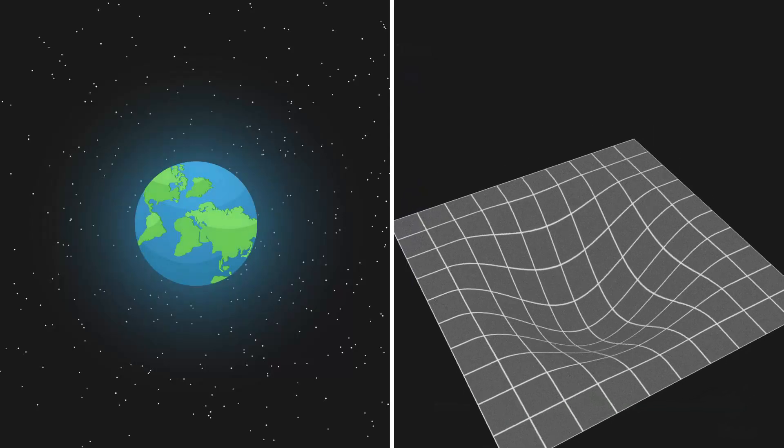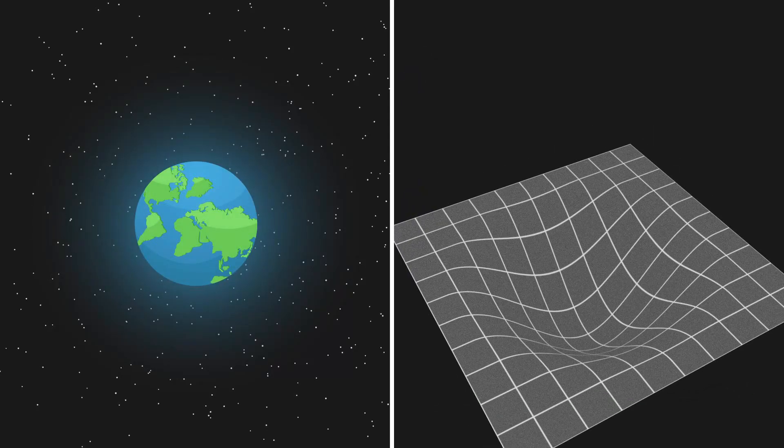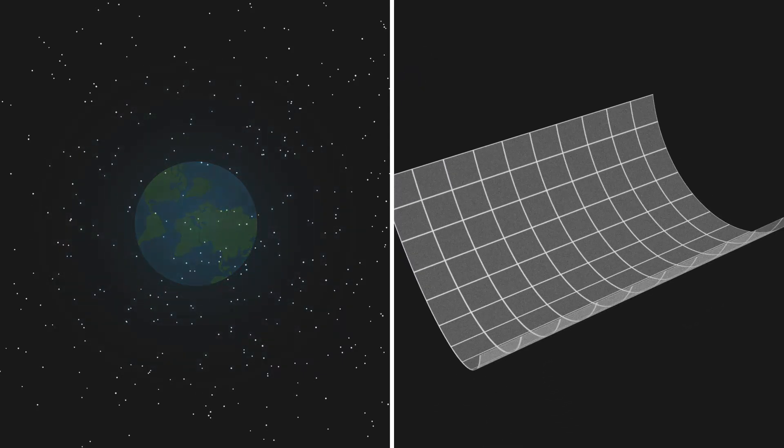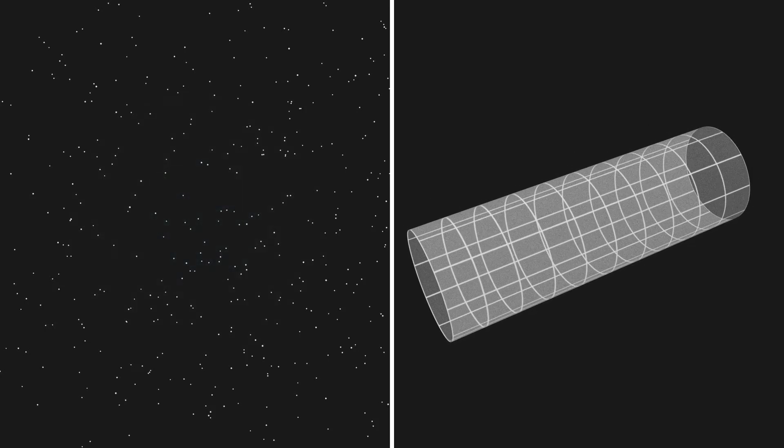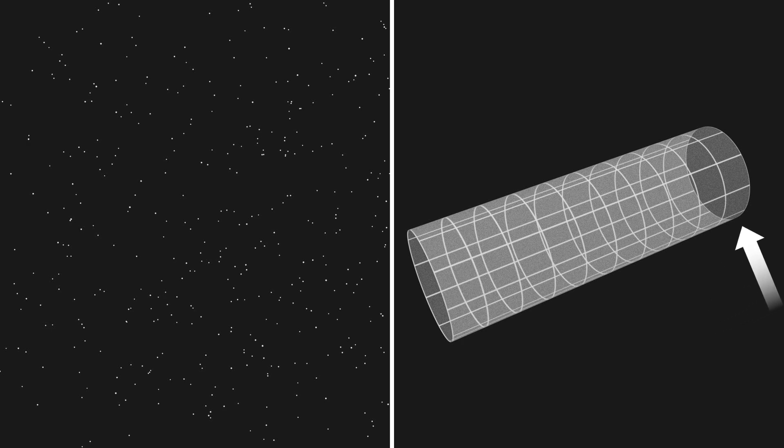Flat spacetime can be simplified and visualized as a two-dimensional diagram with one axis representing space and the other representing time. As we discussed in our previous video, to demonstrate the effects of massive objects, we can imagine this spacetime diagram being rolled into a cylinder. In this visualization, the region of zero gravity forms the cylinder's surface.